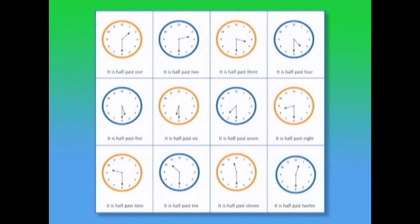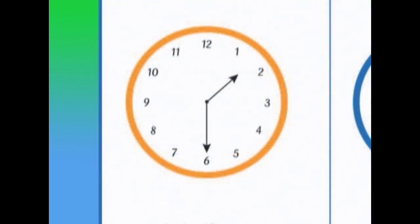Let's look at the first clock in the first row. What time is it? Well, the little hand is pointing... Is it pointing at 1? No. Is it pointing at 2? No. The little hand is pointing halfway between 1 and 2. What number is the big hand pointing at? It's pointing at number 6. The big hand is halfway round the clock.